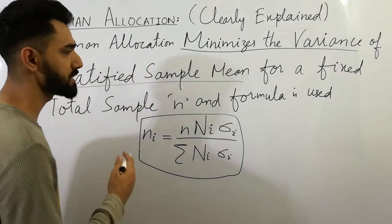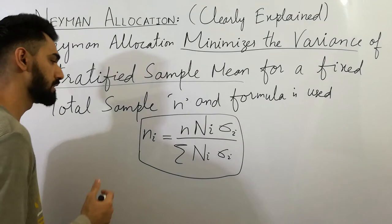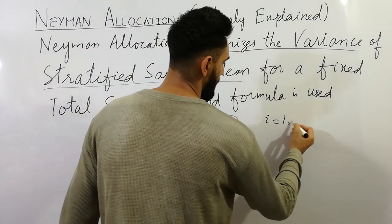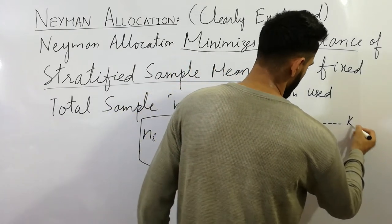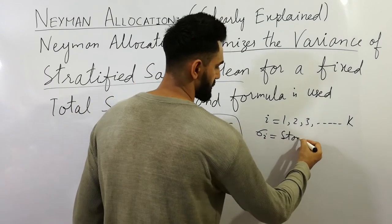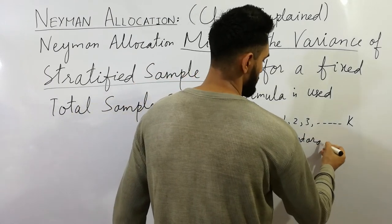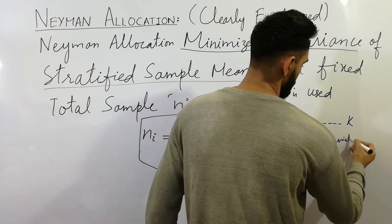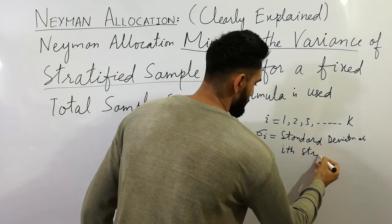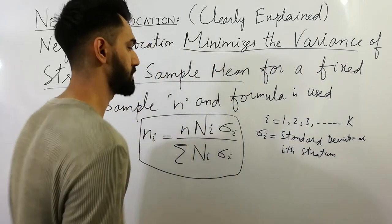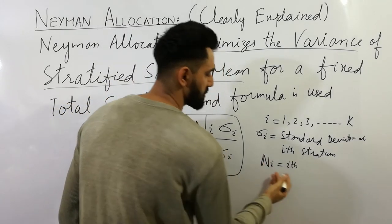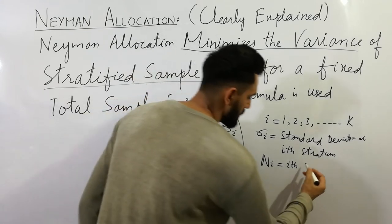Here, iota equals 1, 2, 3, up to k. Sigma_iota is the standard deviation of the i-th stratum, and capital N_iota is the i-th stratum size. Small n_iota is the sample size.